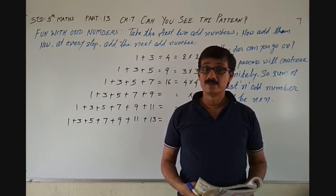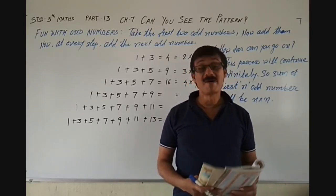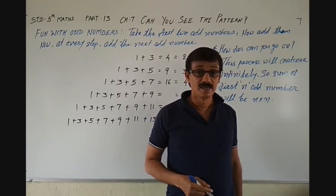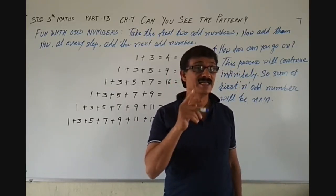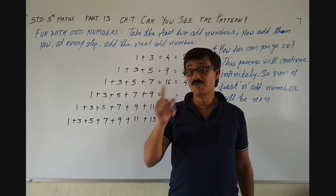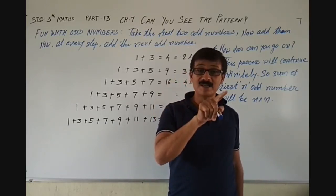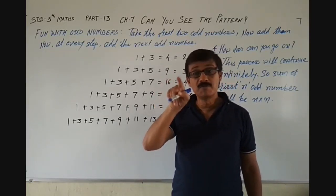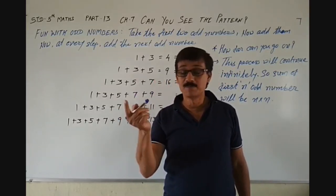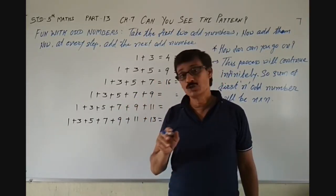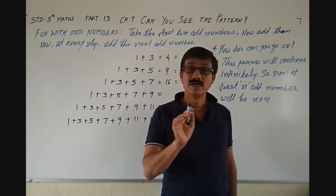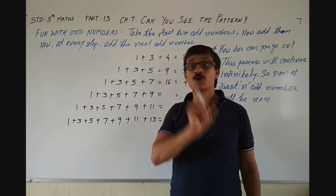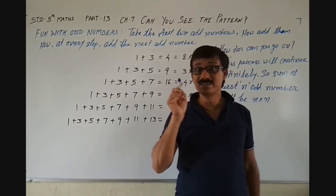In the last part, what did we learn? We learned the sum of 10 consecutive numbers. What is the sum of 10 consecutive numbers? Put 5 behind the 5th number in the row — take the 5th number and then put 5 behind it. That is the sum of 10 consecutive numbers. That is what we learned in the last part.